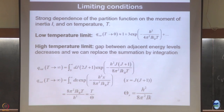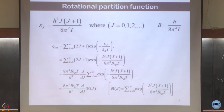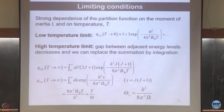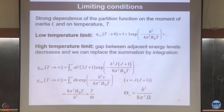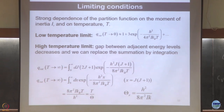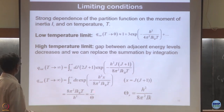At high temperature, the gap between energy levels becomes very small, so I can replace the sum by an integral, just like the translational partition function. I recognize the integrand is a derivative d/dJ of J(J+1), which is trivial to integrate by evaluating at the two limits.